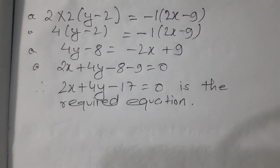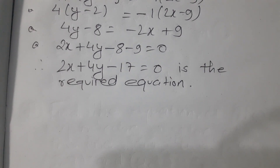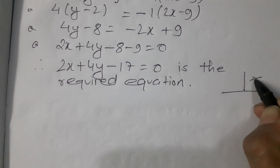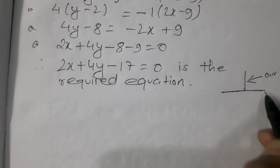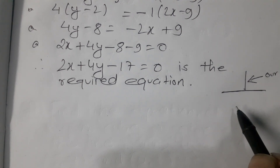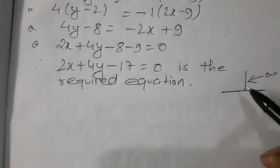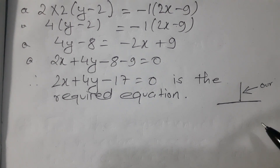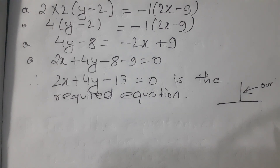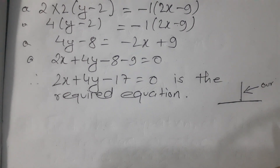So the required equation of the perpendicular bisector is 2x plus 4y minus 17 equals 0. This is how we used the helper line to find our equation when they were perpendicular bisectors. I hope you enjoyed this video. I'll be making more videos related to maths and its concepts. Thanks for watching.